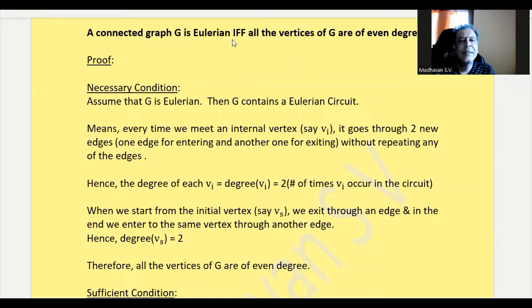Since it's an if and only if statement, we need to prove both sides. We need to consider the graph to be Eulerian and prove that the vertices are of even degree, and conversely, consider a connected graph having all vertices of even degree and prove that it is Eulerian.